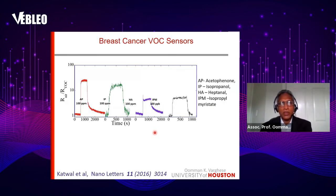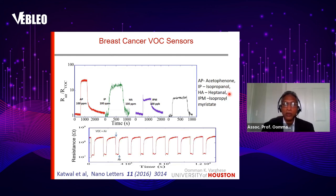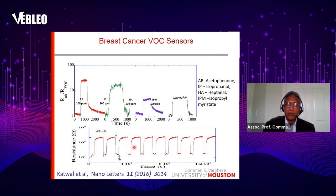We used this material for sensing applications and found that it could really detect biomarkers for breast cancer — specifically isopropanol and isopropyl myristate, among the compounds we tested. The material has a response to these compounds much better than any other compounds, and the response is very stable — even if you cycle the environment, we can get the same response from the material.